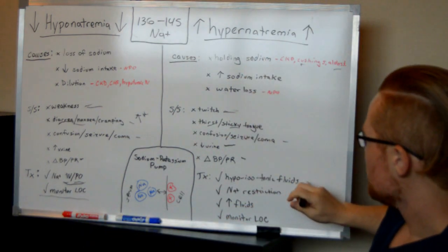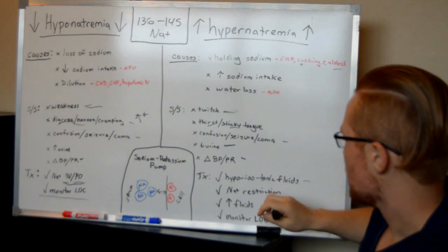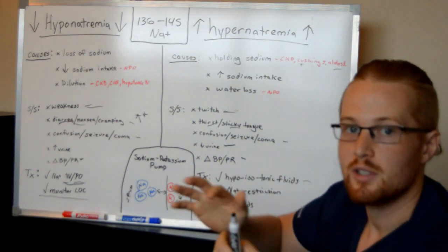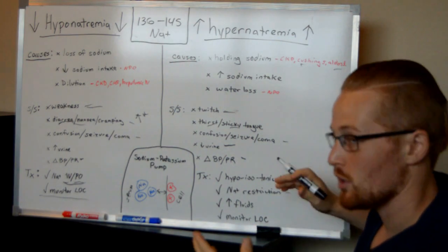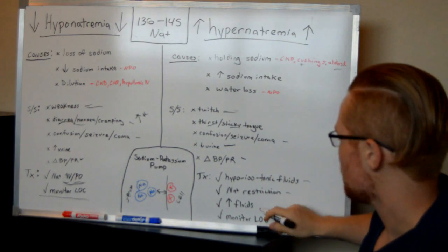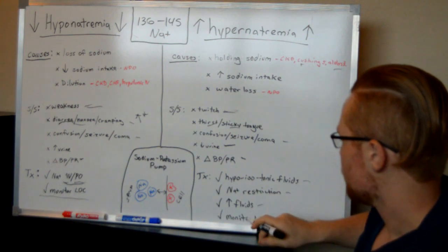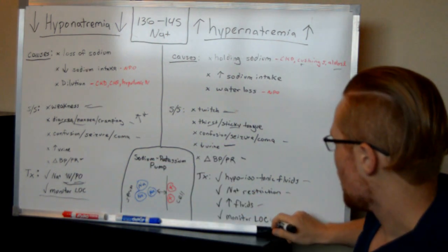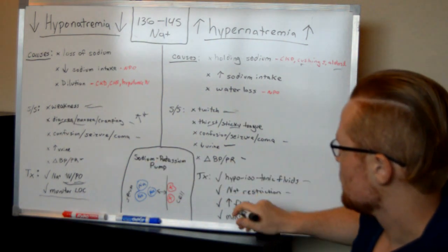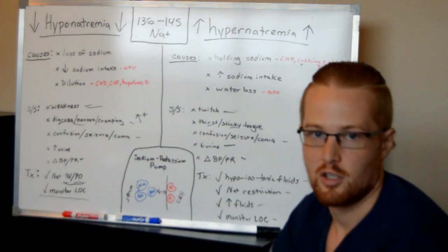With hypernatremia, these patients may need hypotonic or isotonic fluids to give them more fluids to dilute the salt. You want to give them a sodium restriction so they're not eating more salt and getting more salt in their body. Increase their fluids, the same way you're giving them IV fluids, you want them to drink more. And, like I said, with both cases, you need to monitor the level of consciousness and the mentation.